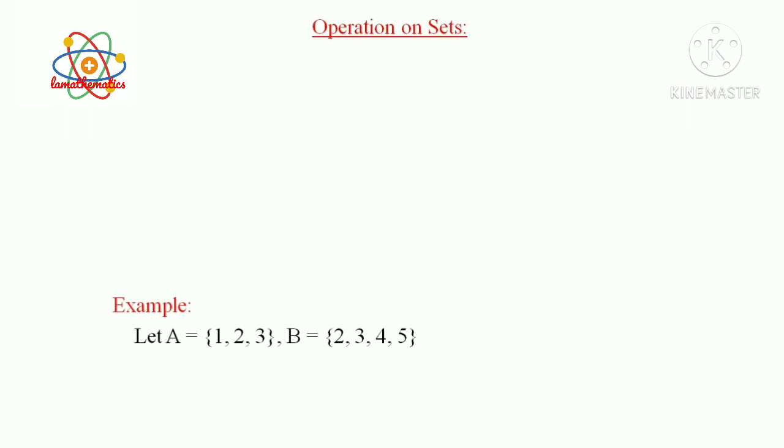By the definition of Set, it is well defined and distinct. That is, repetition is not allowed in the Set. Hence, we can write this as set {1, 2, 3, 4, 5}. That is, 1 belongs to A, 4 and 5 belong to B, 2 and 3 belong to both A and B. This operation is called Union.